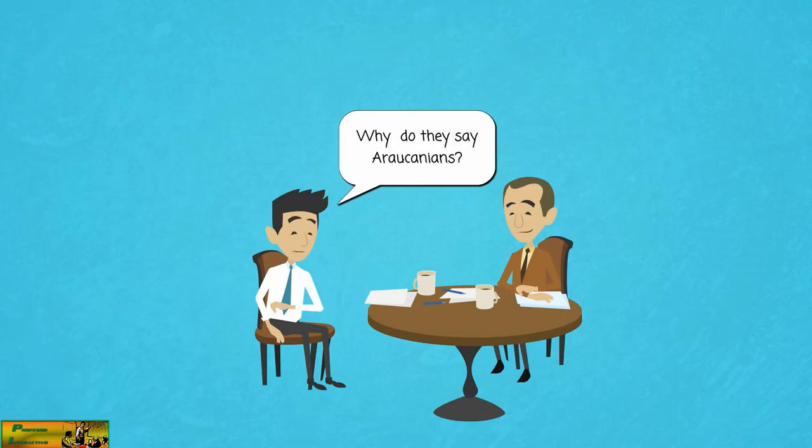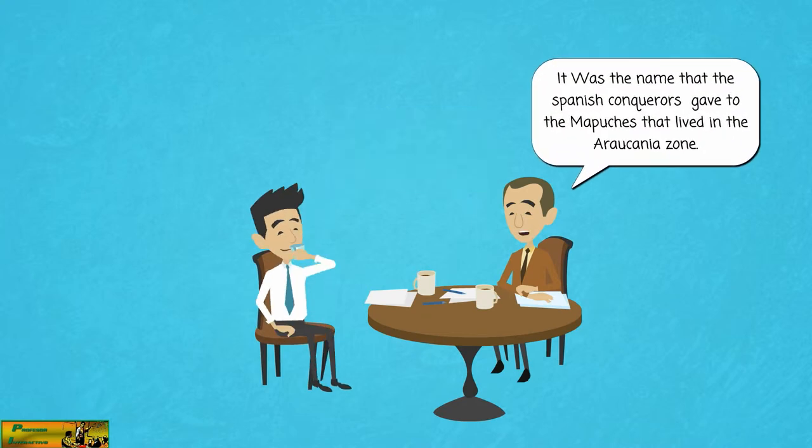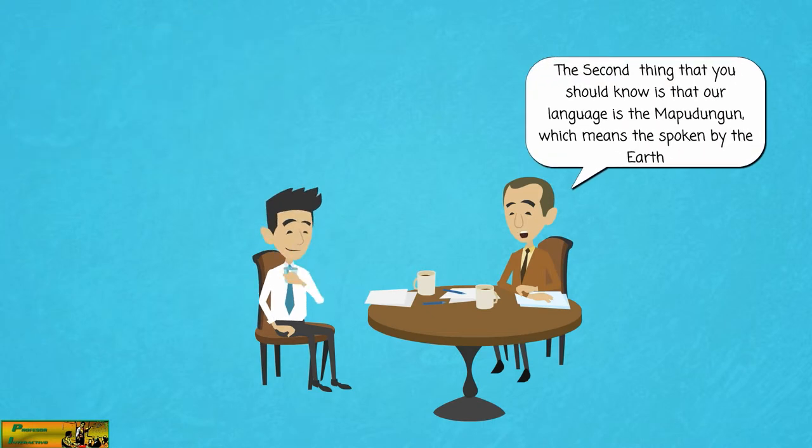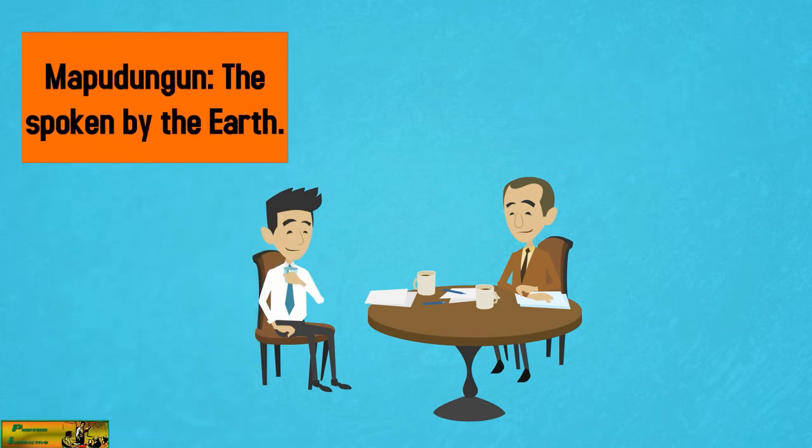Why do they say Araucanians? It was the name that the Spanish conquerors gave to the Mapuches that lived in the Araucania zone. The Araucania zone was spread out along the north of Bio-Bio and the south of Valdivia. The second thing that you should know is that our language is the Mapudungun, which means the spoken by the earth. Mapudungun, the spoken by the earth.